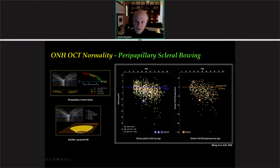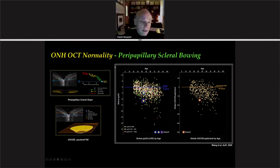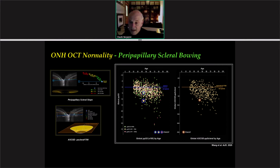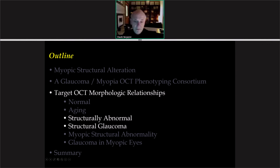We've also characterized peripapillary choroidal thickness and peripapillary scleral bowing, for which we use two parameters: peripapillary scleral slope, and the depth of the ASCO relative to a peripheral scleral reference plane. These are the data for the slope measurements, and these are the data for global depth of the ASCO plotted relative to age. You can see that even in non-highly myopic normal eyes, there is a very substantial increase in bowing of the peripapillary sclera in aged eyes. Macular map thickness has also been characterized within the Caucasian normative database, and continuous thickness mapping strategies are under development.